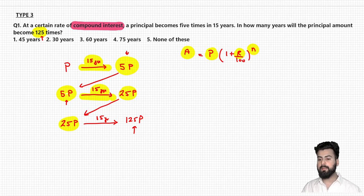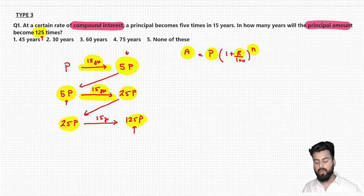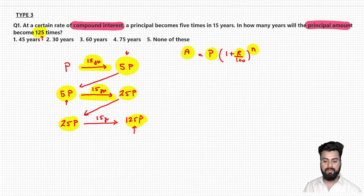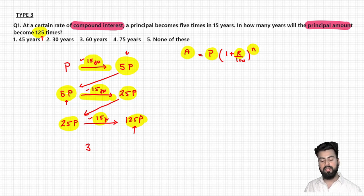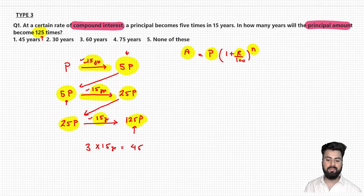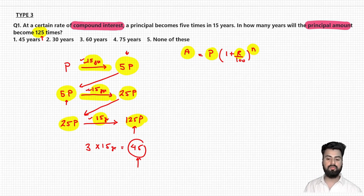We have reached our destination — 125P, which is 125 times the original principal. In how many years was this achieved? Simply add: 15 + 15 + 15. There are 3 compounding periods of 15 years each. So 3 × 15 = 45 years. The answer is 45 years — option 1 is correct. This is one way of solving the question, but not the only way. I can solve the same question using a shortcut.